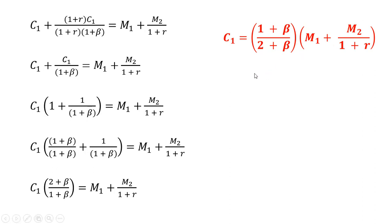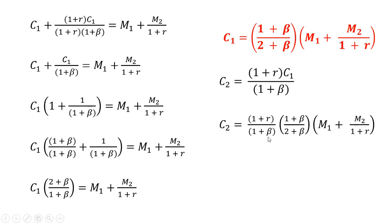Let's get the consumption demand in period 2. Again, we saw this result in the last slide. And so what I'm going to do is for C subscript 1 here, I'm just going to plug in everything in red here on the right-hand side. And you'll get this result. So the 1 plus beta divided by 1 plus beta will cancel, and you're left with this. So this is the demand for consumption in period 2.